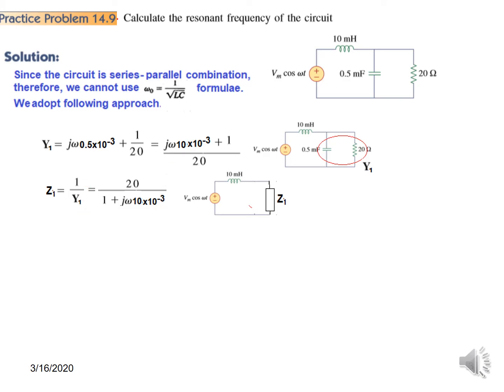Now the total impedance will be adding this with Z₁. So this is the total impedance: Z equals jω × 10 millihenry plus Z₁. Plug in the value of Z₁ again.